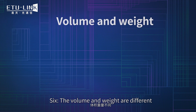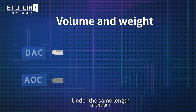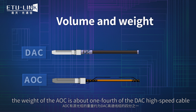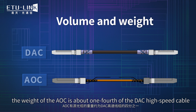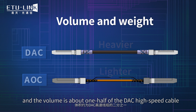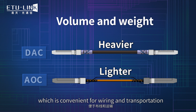Six: the volume and weight are different. The weight of the AOC is about one-fourth of the DAC high-speed cable, and the volume is about one-half of the DAC high-speed cable, which is convenient for cabling and transportation.